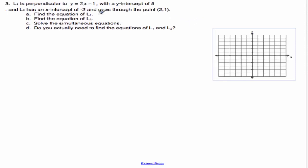For this problem, we know L1 is perpendicular to y equals 2x minus 1 with a y-intercept of 5. L2 has the x-intercept of negative 2 and goes through a given point. I need to find L1, find the equation of L2, and then solve the simultaneous equations. It also asks: do you actually need to find the equations to do it? We'll talk about that a little bit further.